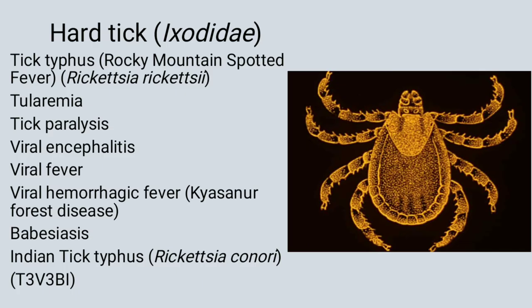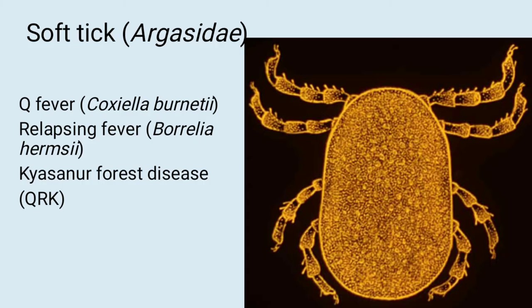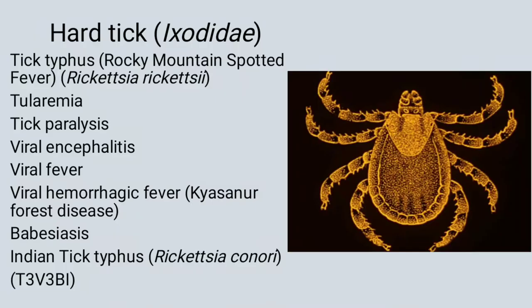Identify the insect: This is hard tick. Hard tick has a head, whereas soft tick does not have a head. Hard tick transmits tick typhus, tularemia, tick paralysis, viral encephalitis, viral fever, viral hemorrhagic fever, babesiosis, and Indian tick typhus. Mnemonic: T3 V3 BI.